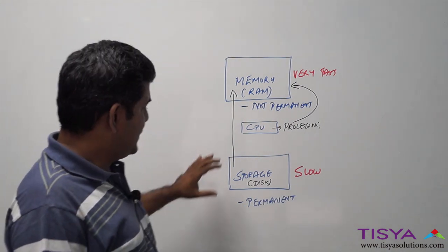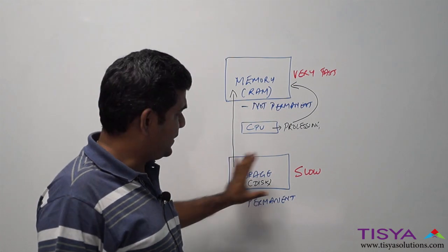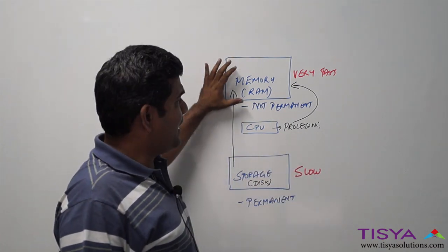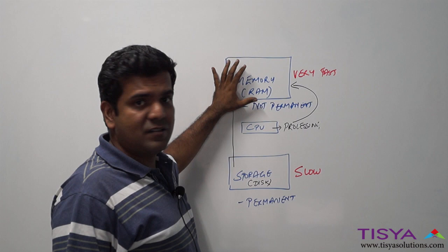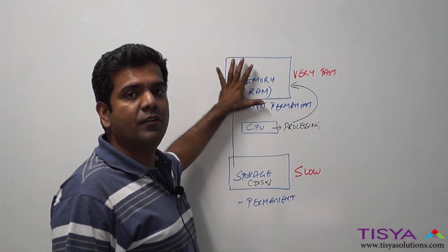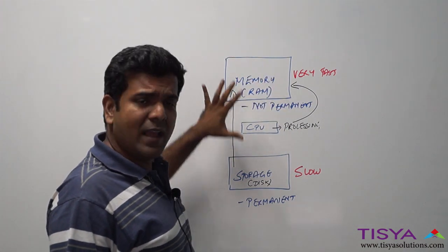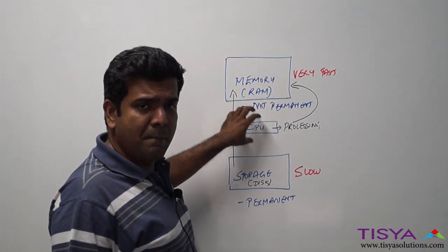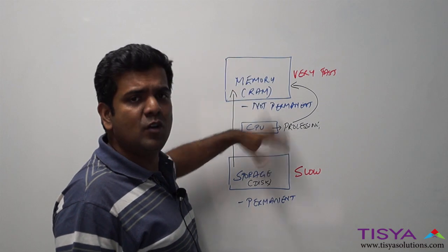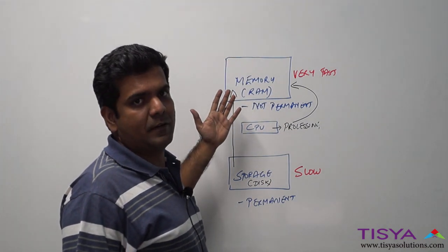To quickly summarize: storage is permanent but slow; memory is very fast but is not persistent, meaning a restart of your computer will erase the contents of the memory. This is the way a computer works, and the processor makes use of the contents in the memory to do any kind of processing that you want.